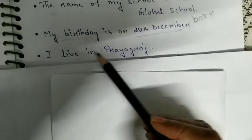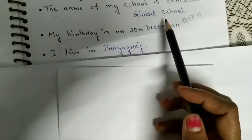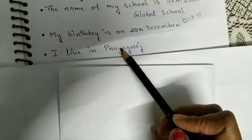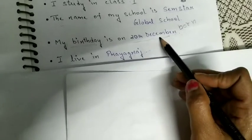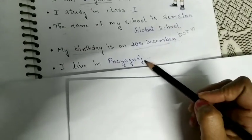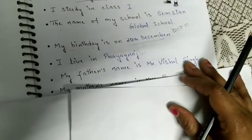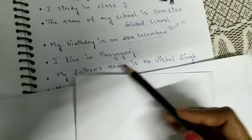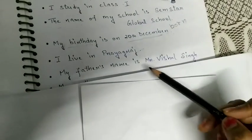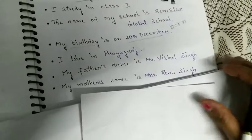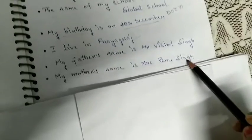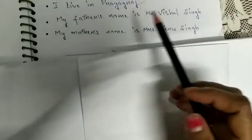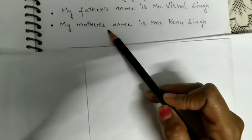I live in Prayagraj. Neha is saying that Prayagraj is the name of the city where she lives. My father's name is Mr. Vishal Singh. Neha is saying that her father's name is Vishal Singh — she is introducing her father's name. My mother's name is Mrs. Renu Singh. Neha is introducing her mother's name: Renu Singh.